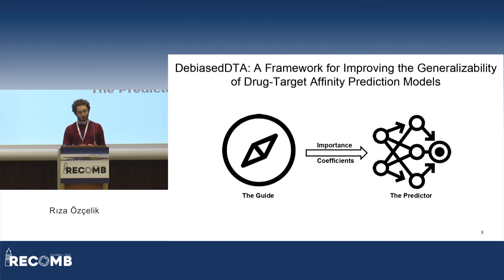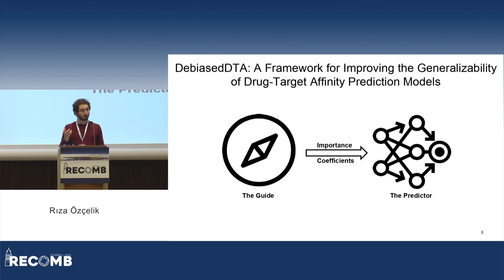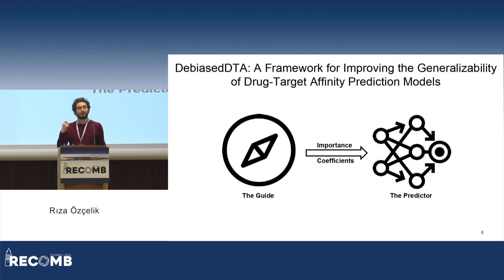That is what we have done in this work. We proposed Bias DTA — a model training framework for improving the generalizability of drug-target affinity prediction models. In Bias DTA we propose a two-stage training strategy. In the first stage, we train a model called the guide model to learn and avoid dataset biases. This model outputs importance coefficients so that an actual drug-target affinity predictor can use them to guide its training and hopefully generalize better.